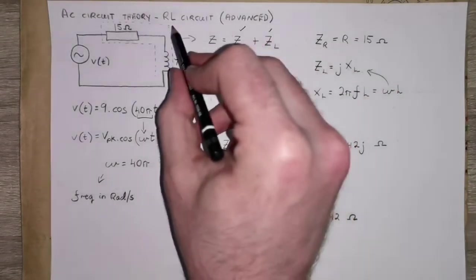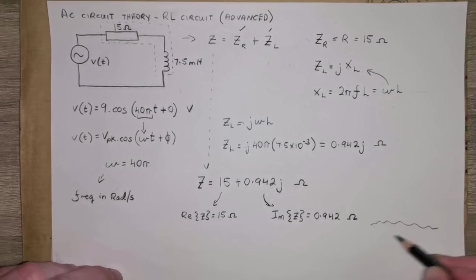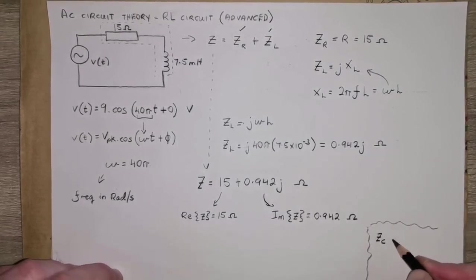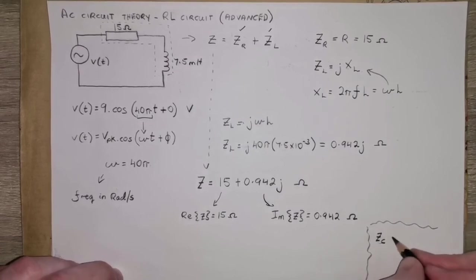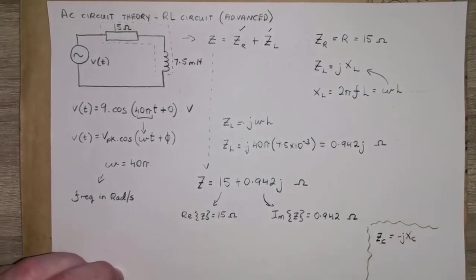You would take the same approach here for an RC circuit. The impedance of the capacitor is minus j Xc. So a slightly different calculation, but the same approach.